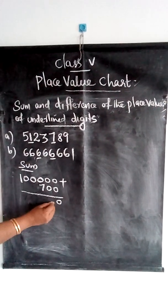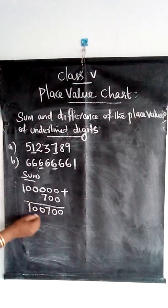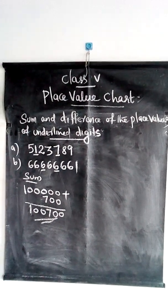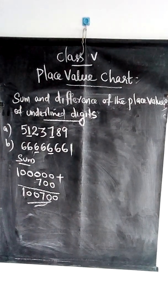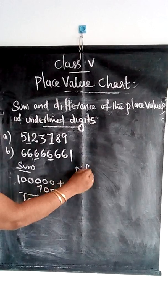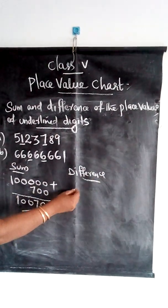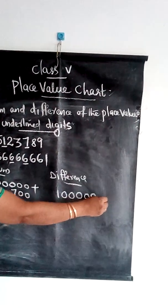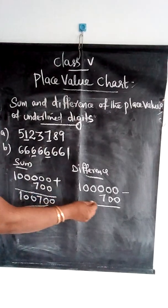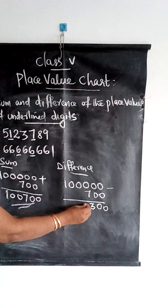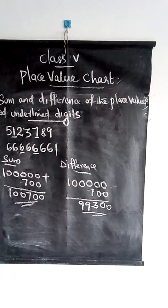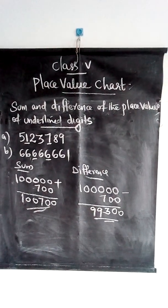Then we add those values together. That gives us the sum of the place values of the underlined digits. Now we find the difference using the same place values: 1 lakh minus 700. After subtracting, 99,300 is the difference.